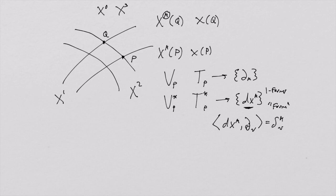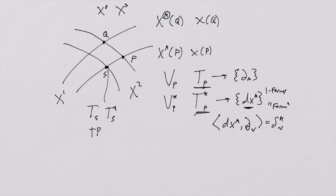All the same rules we've always used still apply, but now we're going to call this the tangent space and this the cotangent space. Every point in spacetime has its own tangent space and its own cotangent space, and it has all of its own tensor product spaces that all exist at every single point in spacetime.